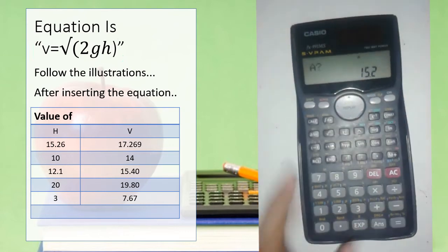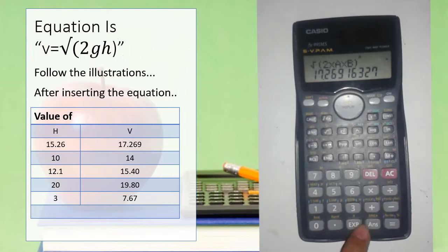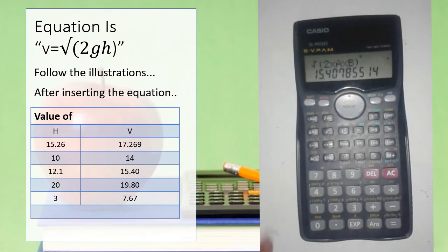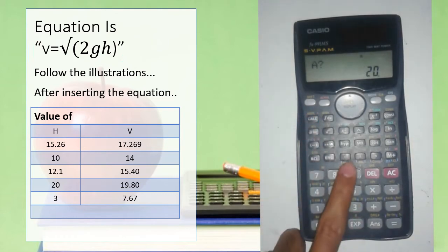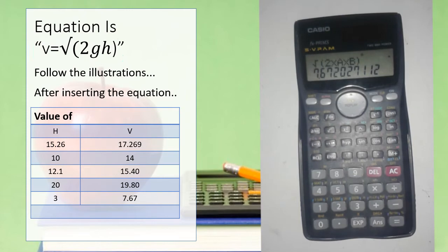Now the value of a, that is g, is 9.81 and the value of b is the height h. By inserting the values, it gives us the magnitude of v. As you can see, it's retaining the value of g at 9.81, which becomes easy when some variables are fixed for a particular interval. You can change the values and get the required results.